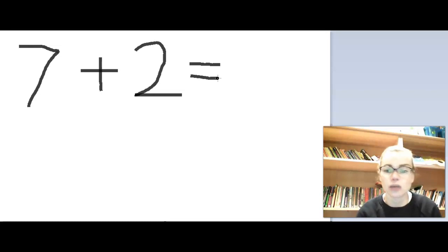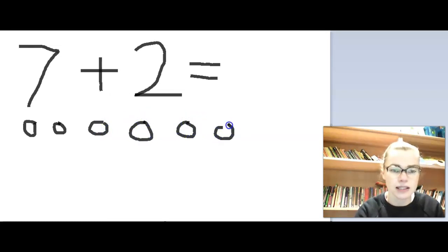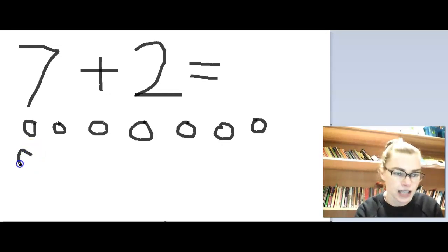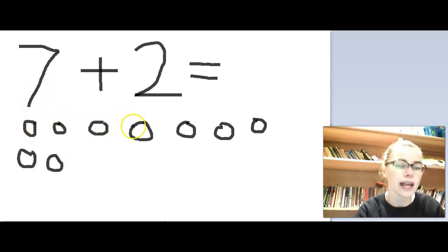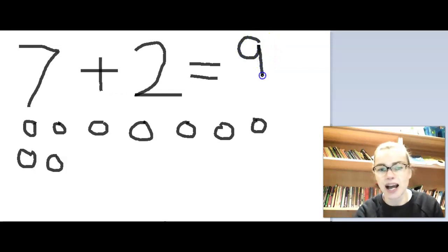To work out the answer to our question, we're going to do pictures to help us. So I'm going to do 7 circles first — 1, 2, 3, 4, 5, 6, 7. Then if I look back at my question, I'm adding on 2, so I'm going to do 2 more circles on another line so I don't muddle them up: 1, 2. Then I need to count how many I've got all together — count with me: 1, 2, 3, 4, 5, 6, 7, 8, 9. So 7 add 2 equals 9 — I can finish my number sentence and write the number 9 here.